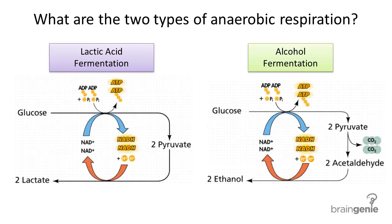In this lesson, you will learn how living things produce energy if oxygen is absent. Overall, when there is a lack of oxygen available, living things can still produce energy, but a lot less than if oxygen were present. The process of producing energy in the form of ATP when there is no oxygen present is called anaerobic respiration, or sometimes called fermentation. There are two kinds of anaerobic respiration: lactic acid fermentation or alcohol fermentation. In this lesson, we will review both and give an example of each.